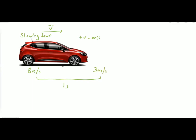The car is slowing down even though it moves along the positive x-axis, so velocity is positive. However, the magnitude of velocity decreases. Acceleration equals (3 − 8) / 1 = −5 m/s².